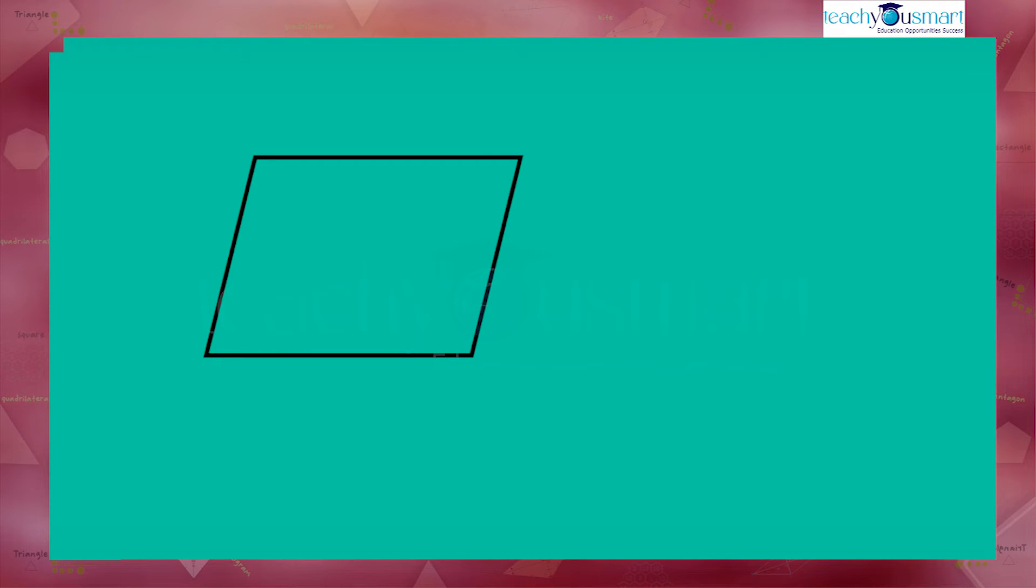Now, let's look at another polygon, quadrilateral ABCD. Angle DAB, angle ABC, angle BCD, and angle CDA have A degrees, B degrees, C degrees, and D degrees respectively.